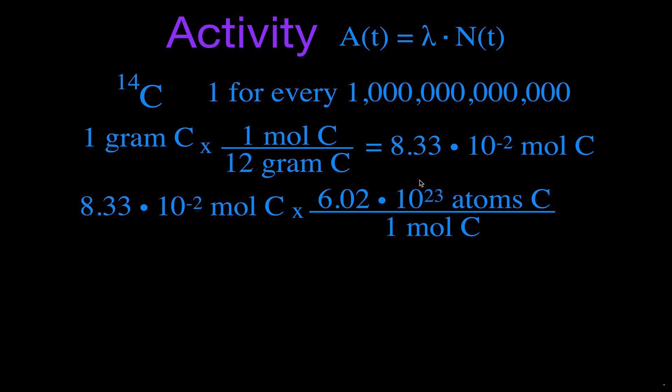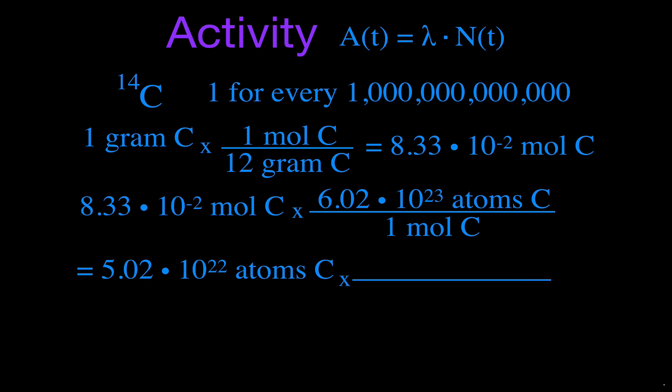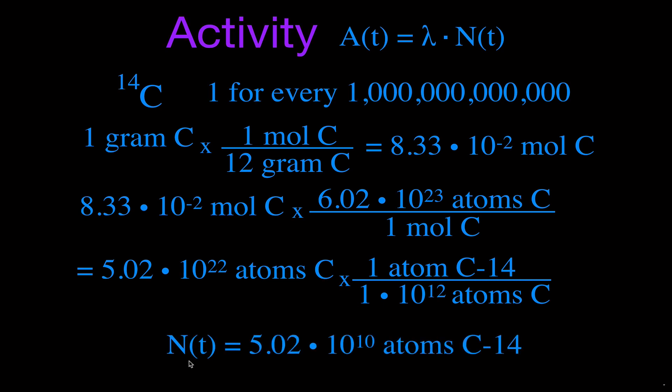We multiply the number of moles by Avogadro's number, and we find that in a one-gram sample of carbon there are 5.02 × 10²² atoms of carbon total — all isotopes: 12, 13, and 14. Since carbon-14 occurs at one per trillion, we divide by one trillion, giving us N(t) — the number of carbon-14 atoms in one gram of carbon — equal to 5.02 × 10¹⁰ atoms of carbon-14.